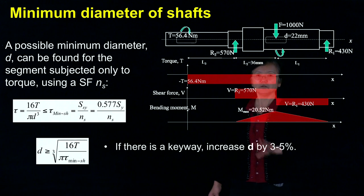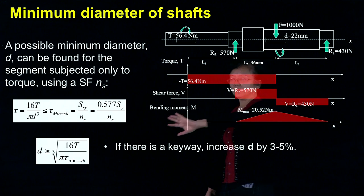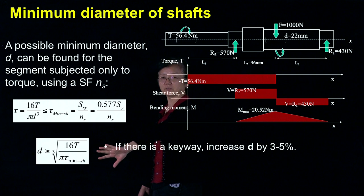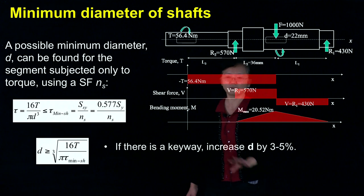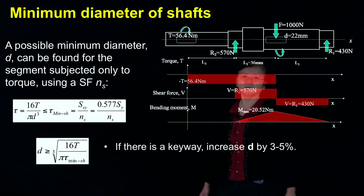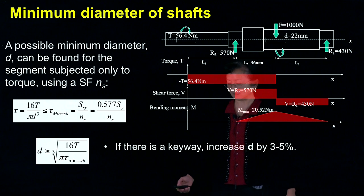So first, if there's a keyway, we increase the value we calculated from here by 3 to 4%, 3 to 5%, or safely 4%, things like that in the middle.